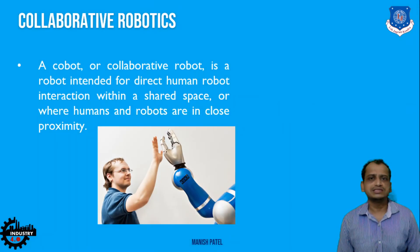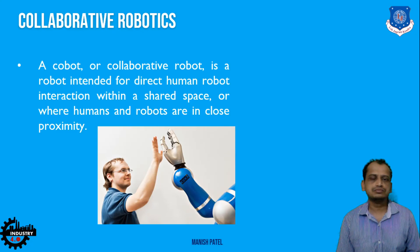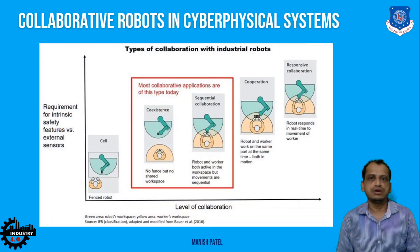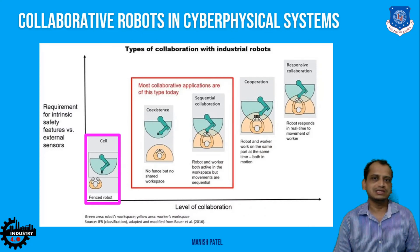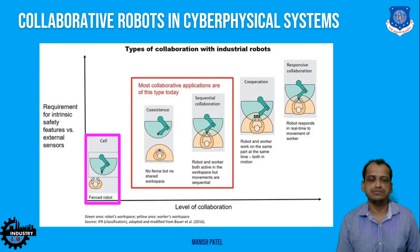Collaborative robotics — or cobots — are robots that share space with workers so they can work collaboratively, helping human workers perform their tasks efficiently. There are different levels of collaboration. The first level involves fencing around robots: the worker and robot work in the same area but independently, with a fence separating them.